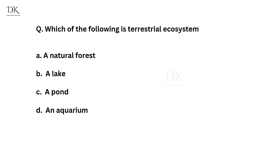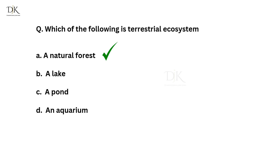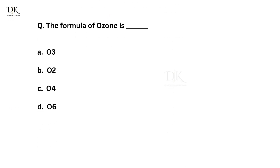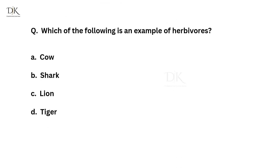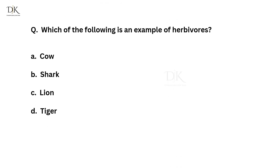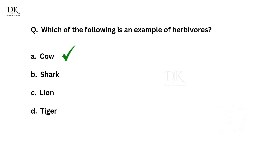Which of the following is a terrestrial ecosystem? The right answer is a natural forest. The formula of ozone is? The right answer is O3. Which of the following is an example of herbivores? The right answer is cow.